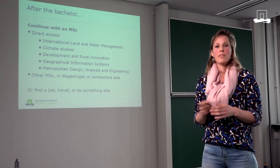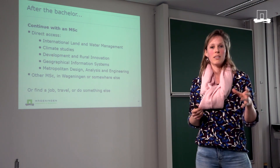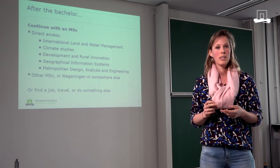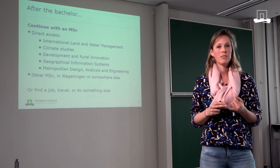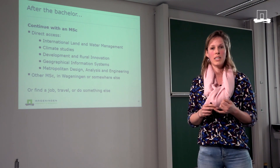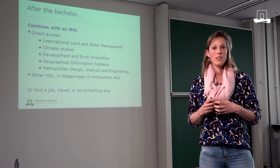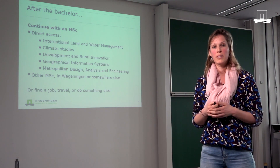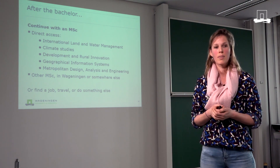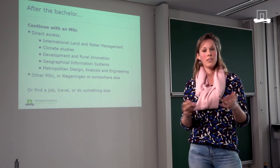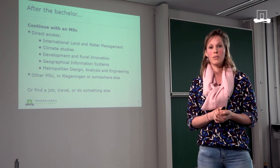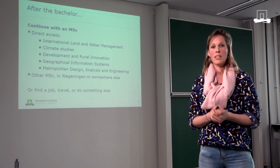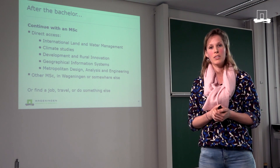Our bachelor program gives direct access to five master programs: our own master in International Land and Water Management, Climate Studies, Development and Rural Innovation, Geographical Information Systems, and Metropolitan Design Analysis and Engineering. You could also choose to do another master in Wageningen or elsewhere, and use your minor to prepare for that. Sometimes our students also start doing other things — some find a job, others start traveling for a year. We will help you with making the choices that are best for you.